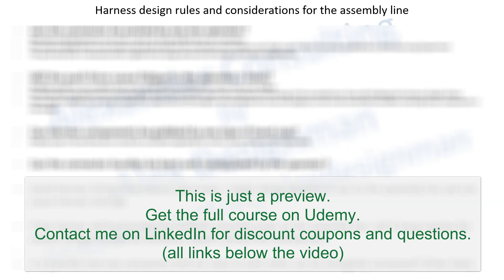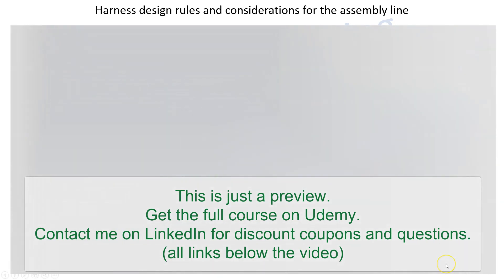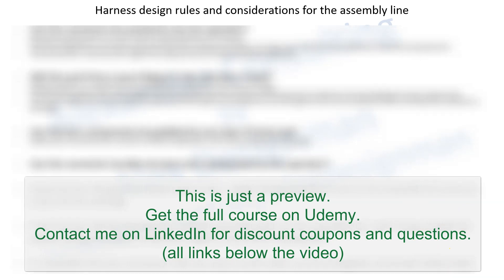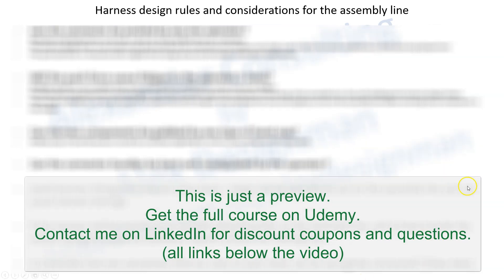You cannot add extra fixing points on the vehicle if the harness is just hanging there — that won't be accepted. The connectors also need to be poka-yoke, meaning they must have a design that prevents incorrect connection even if someone tries. Those are the real challenges you might face when designing electrical harnesses for vehicles — both inside the vehicle and on the assembly line.